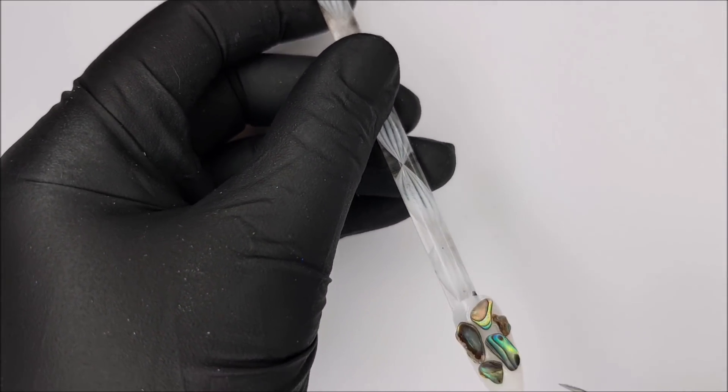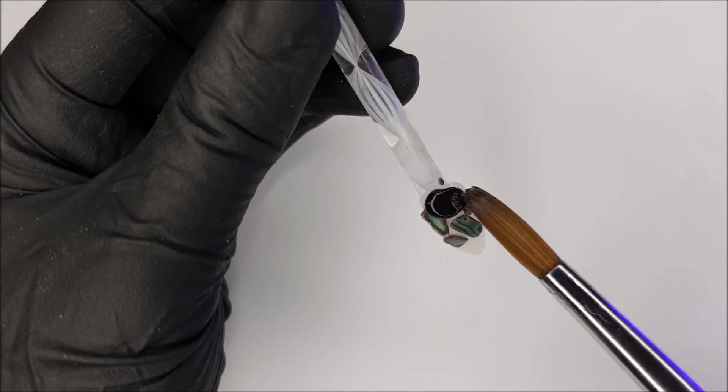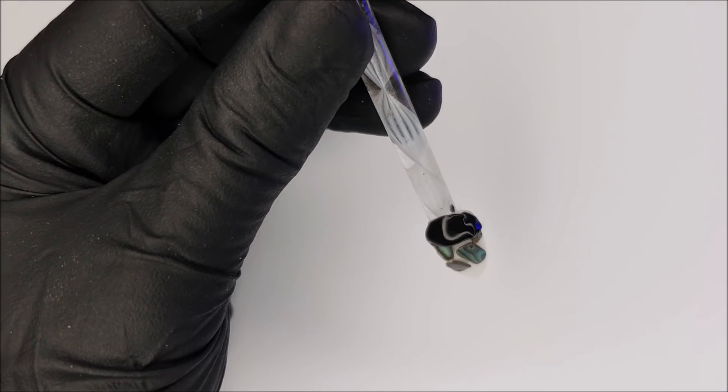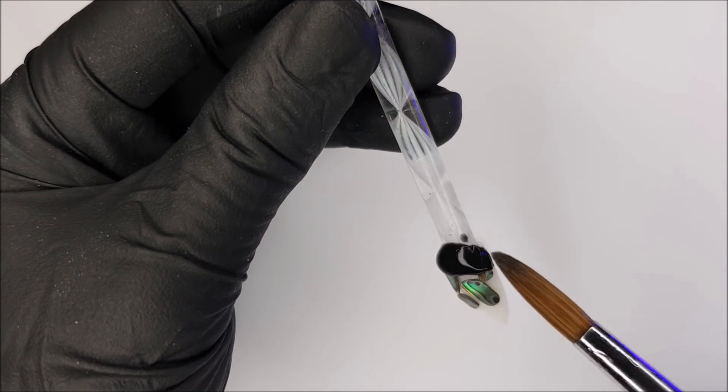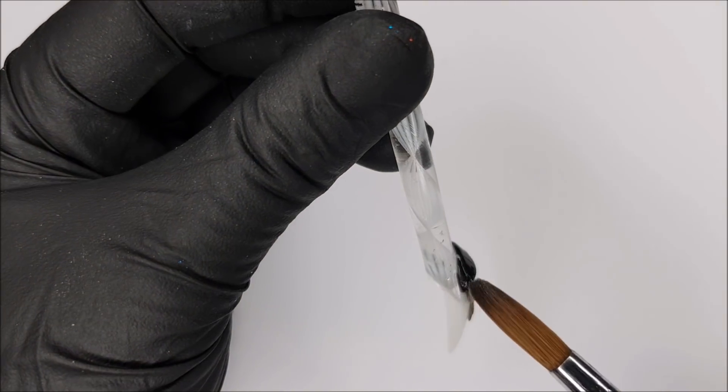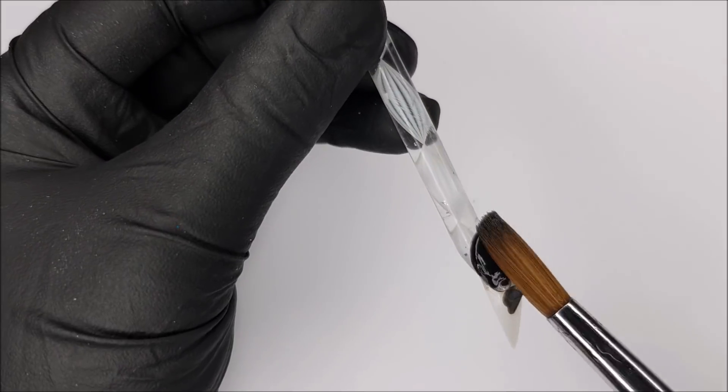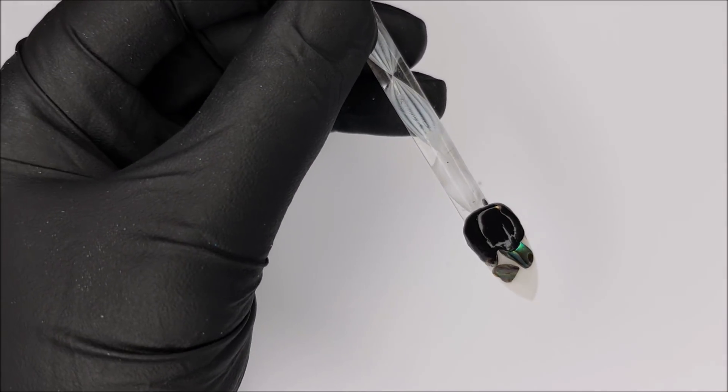When you're happy with the placement of the shell, you can cure that so it stays in place. Then I'm going to come in with some black acrylic. You want to make the acrylic quite wet because you want it to run in between the spaces between those shells. Use quite a wet bead and just make sure that as it runs up the nail it fills in those little gaps.